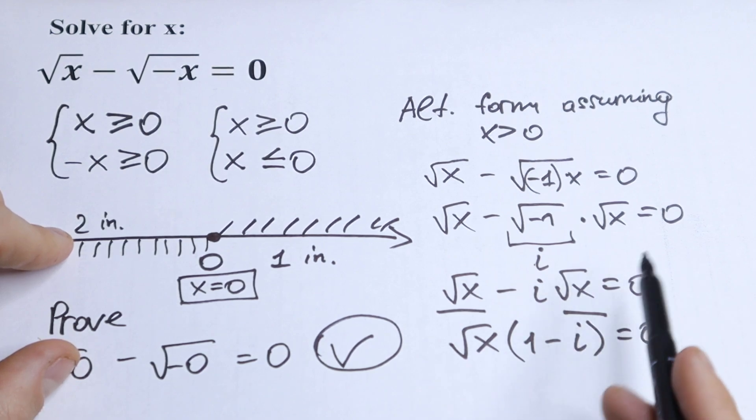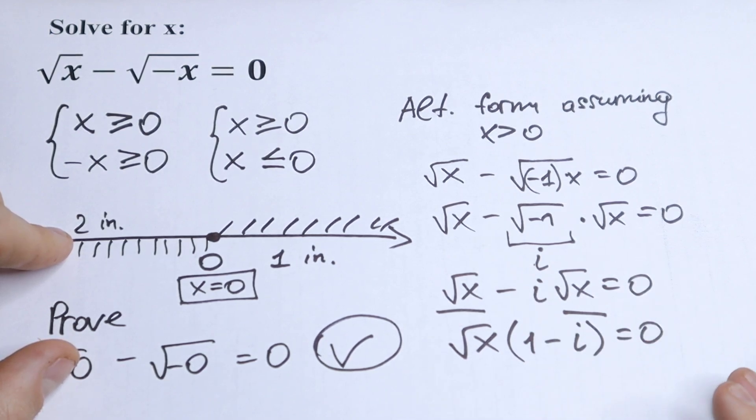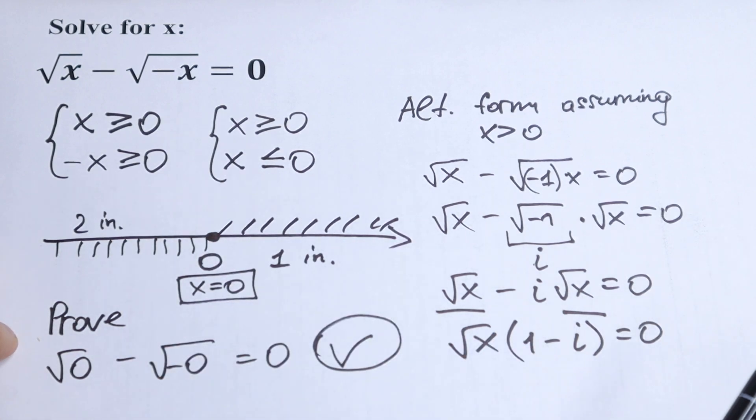So this is a little bit complex numbers right here and this is in inequality method. So which one you like the most?